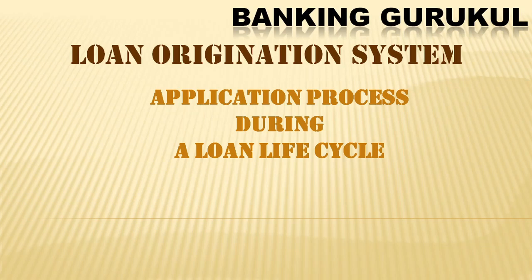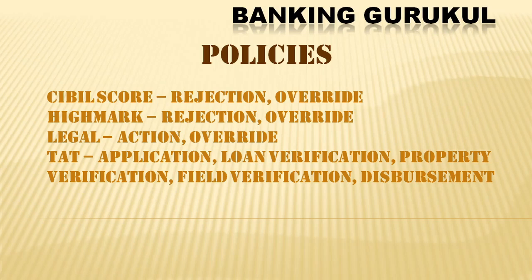We will discuss the stages involved in loan origination system. Before giving a loan — whether personal loan, business loan, or housing loan — first you have to set up your policies. In your policies you have to mention what CIBIL score you want to approve, reject, or override. For example: 650 and above — approve; 550 to 650 — override; below 550 — reject.